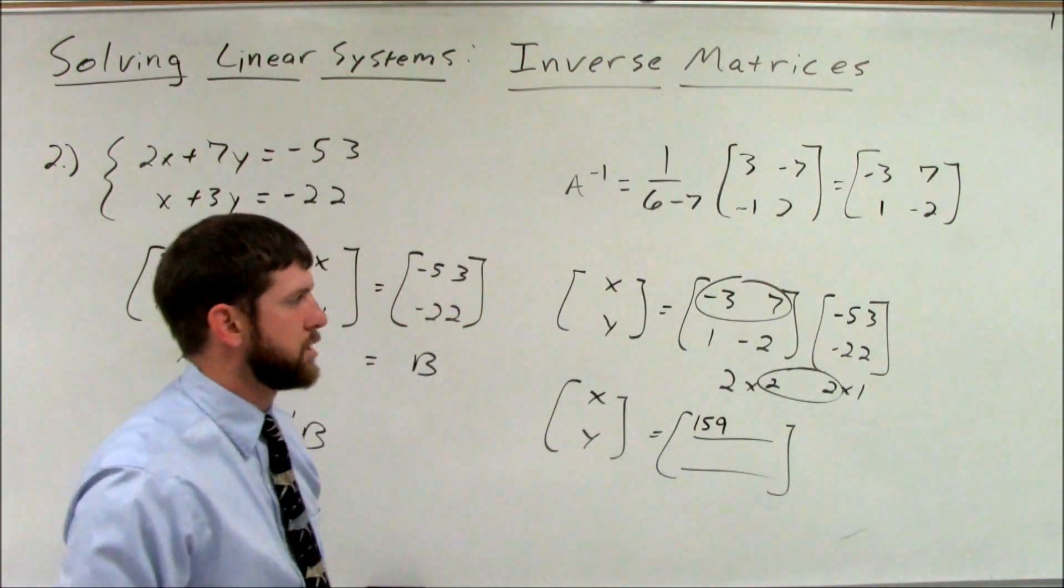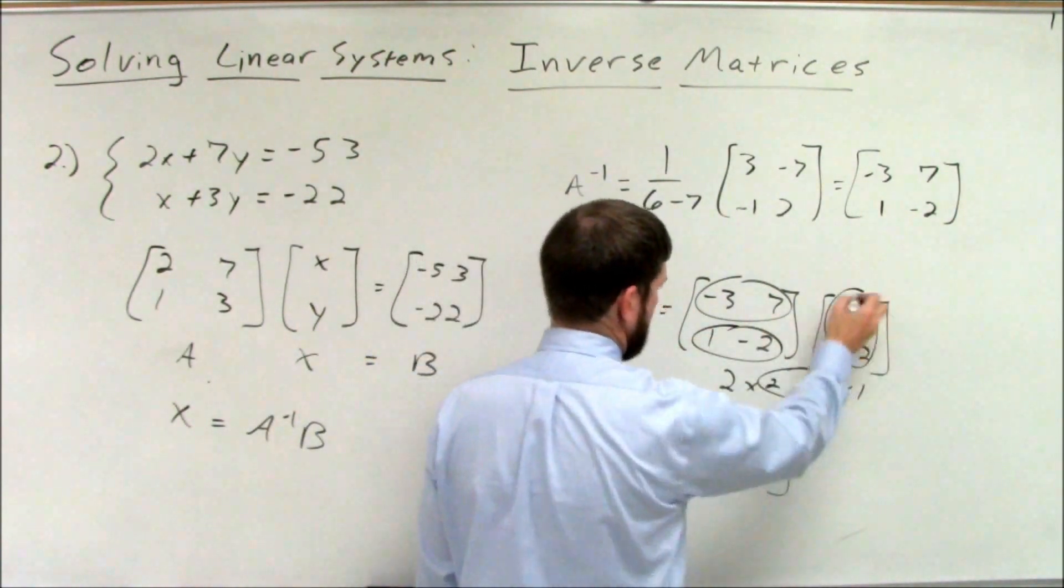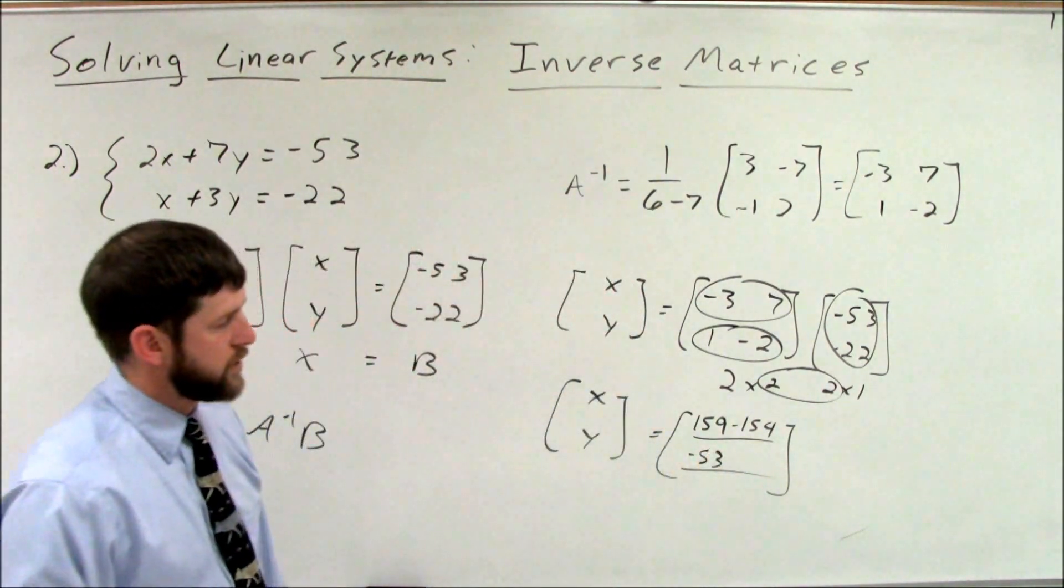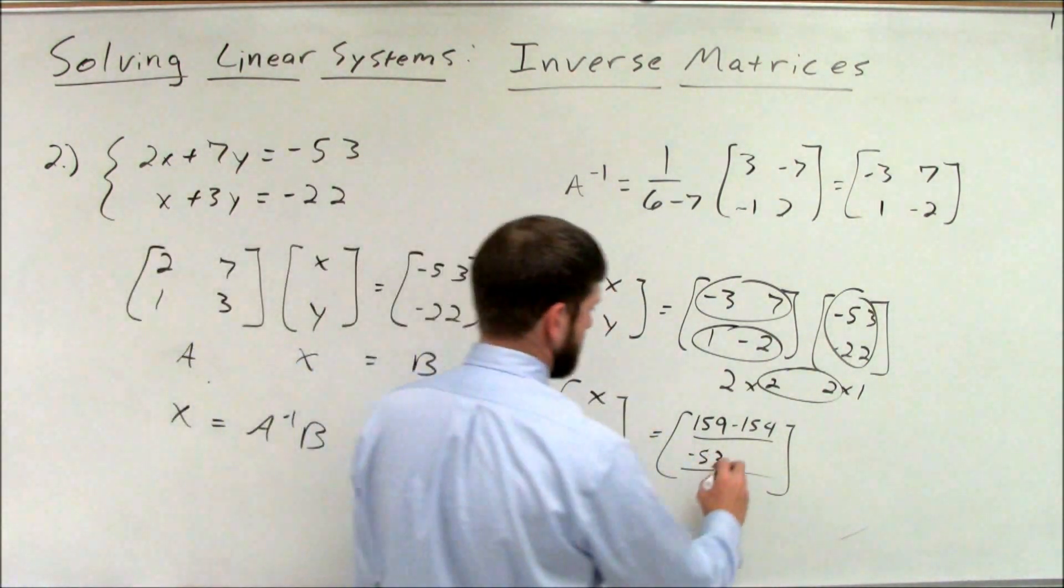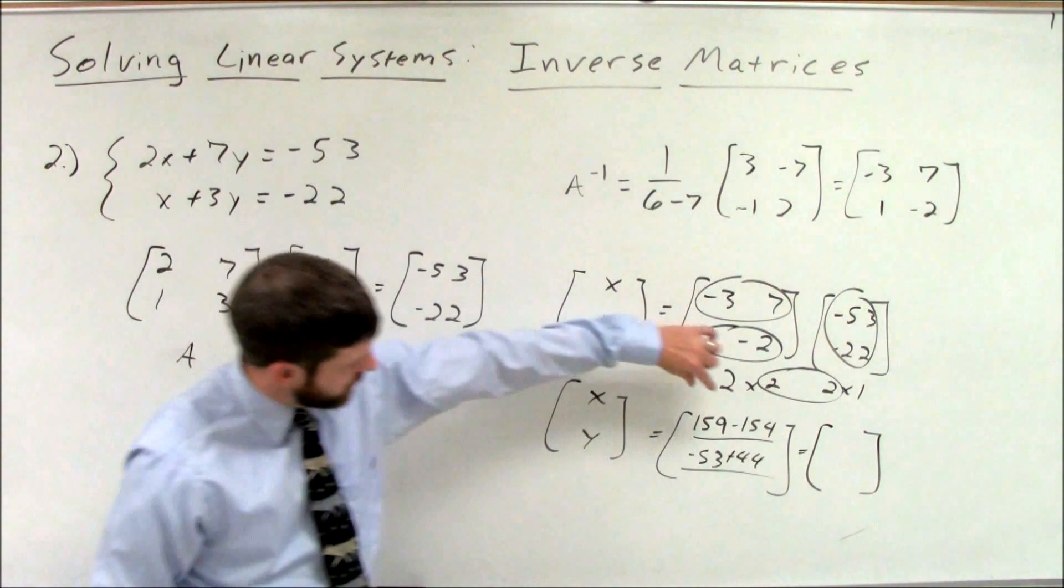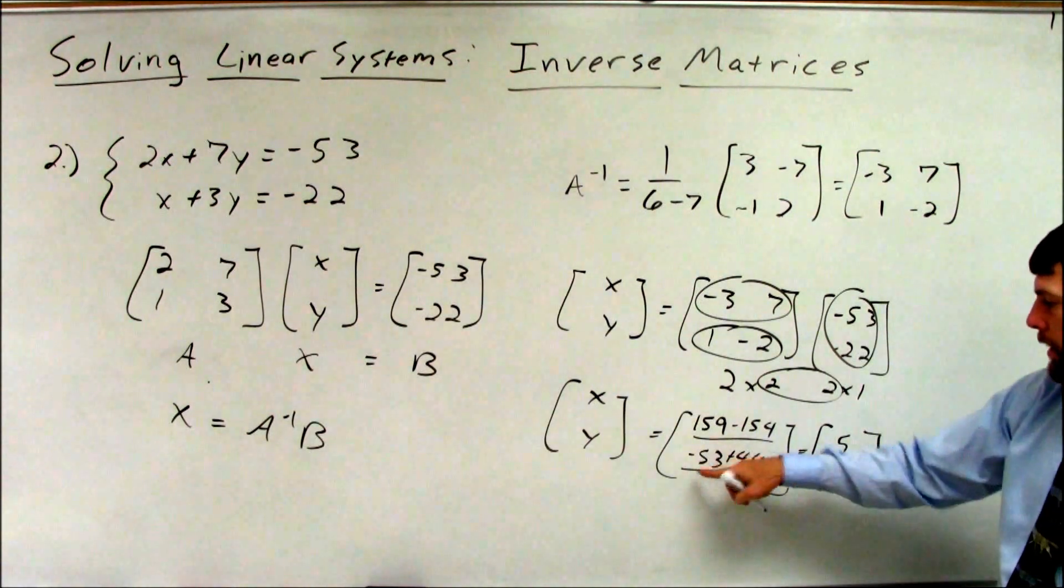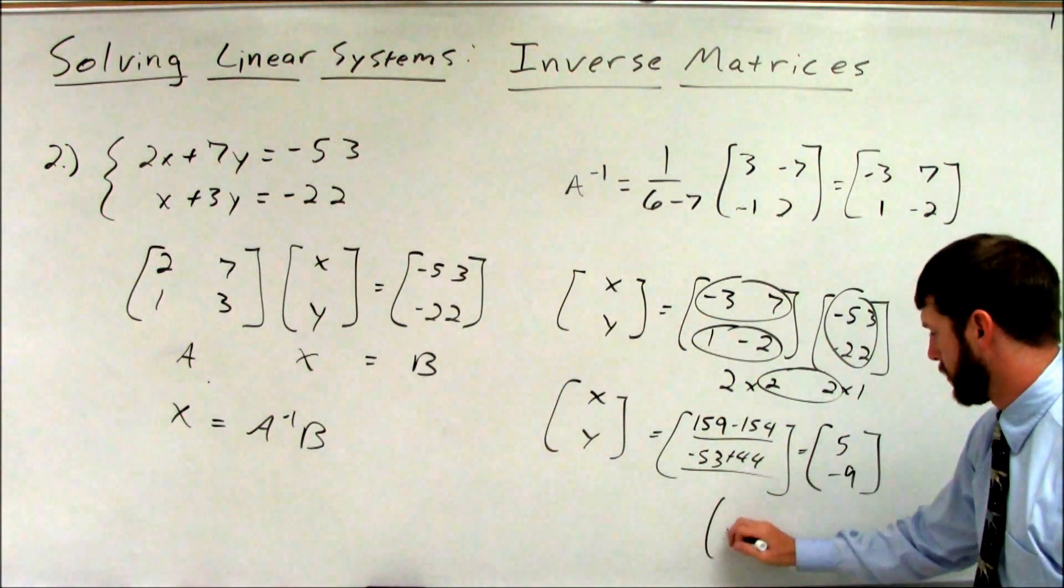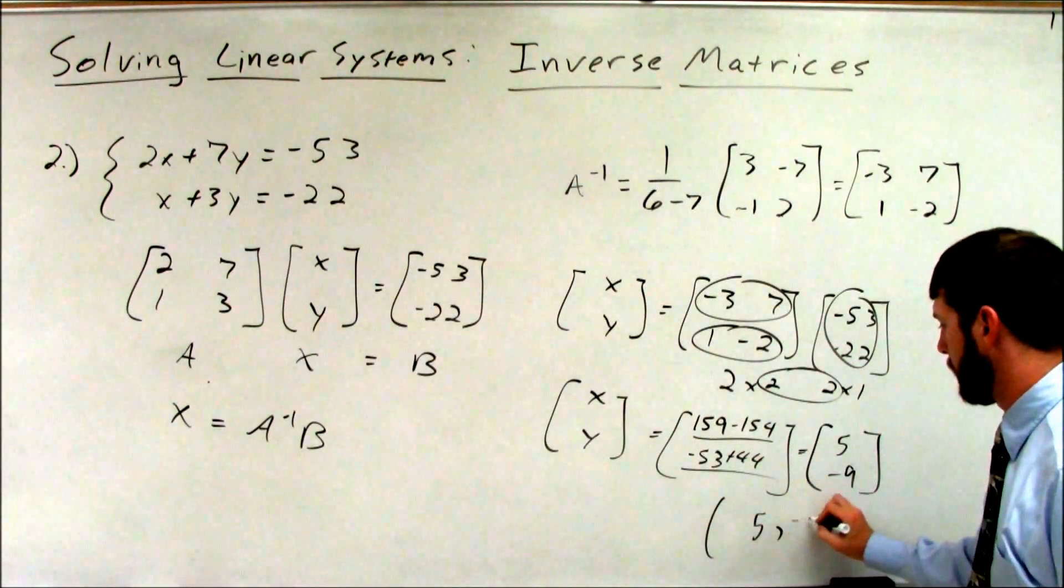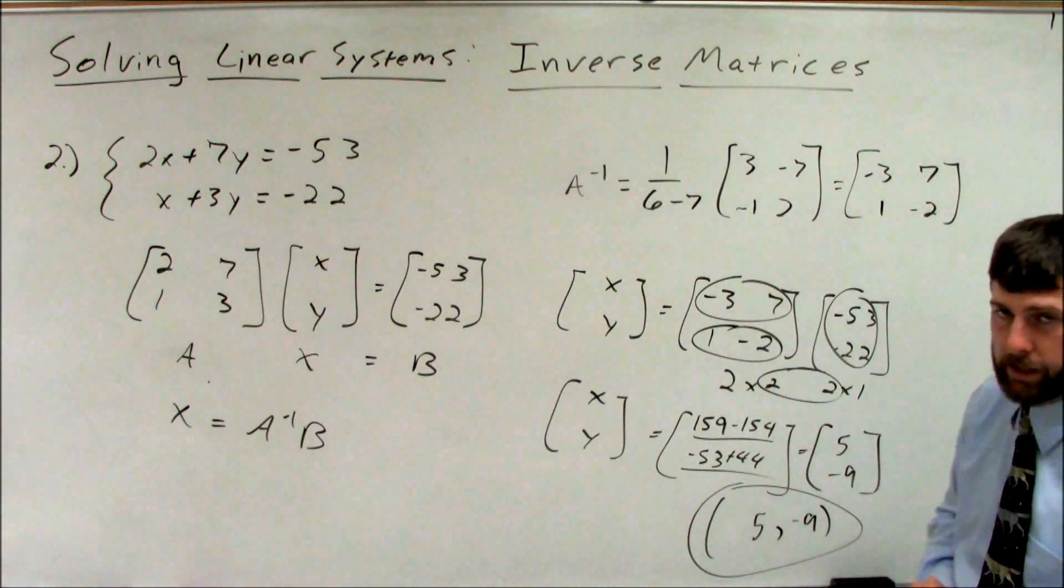Now we know that we should have got negative 3 times negative 53 is 159. 7 times negative 22 is negative 154. Row 2 by column 1. 1 times negative 53 is negative 53. Negative 2, negative 22 is positive 44. So when we clean it up, we get 5 over here. And negative 9. So that's the solution. Positive 5, negative 9. And you can go through and check and you will see that is correct.